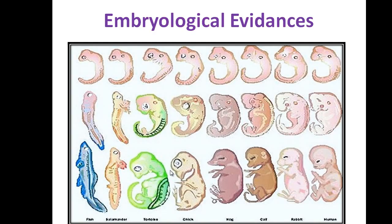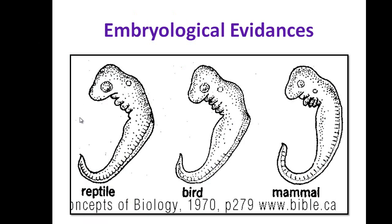The last evidence is embryological evidence. On screen, you can see the embryos of different organisms like fish, salamander, tortoise, chicken, pig, cow, rabbit, and man. At the primary stage, the embryos of all these different organisms look very similar, indicating that although these organisms are different, they may share the same ancestor. You can see embryos of reptile, bird, and mammal — they are different after maturity, but at earlier stages their embryos are very similar. This indicates they have the same ancestry. This is all about evolution. Thank you very much.